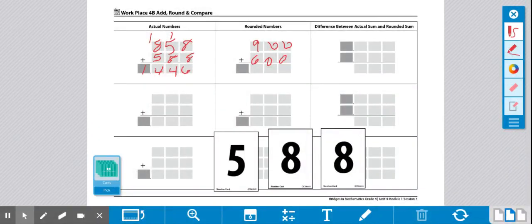So 9 plus 6 is 15. So we have 1,500 and 1,446.